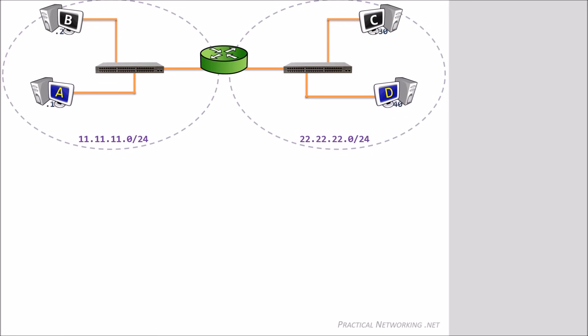Each host will also have an IP address in their respective network. For example, Host A's IP address will be 11.11.11.10. Each host will also have a MAC address. I'm only providing the first four digits of the MAC address — if you repeat this three times, you'll get the complete MAC address. The router interface will also have an IP address and a MAC address. I will refer to the router's left interface as Ethernet1 or ETH1, and the right interface as Ethernet2 or ETH2. The switches will be referred to as SwitchX and SwitchY.